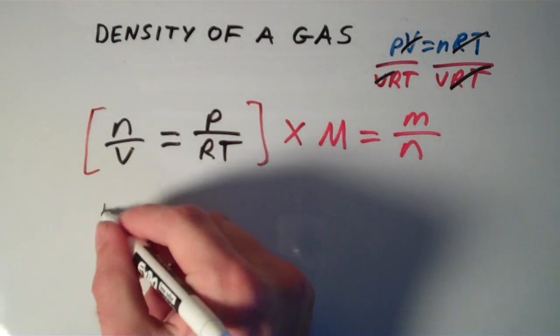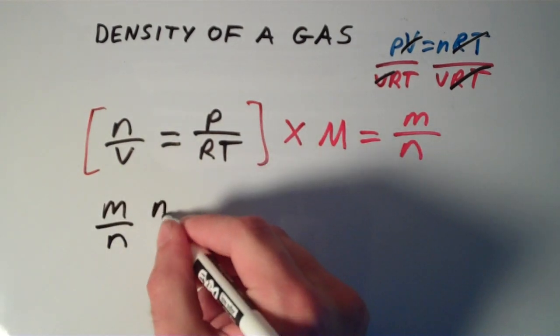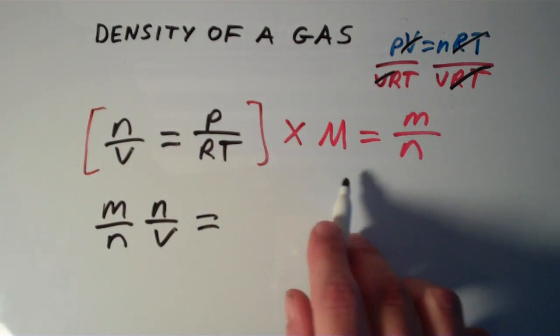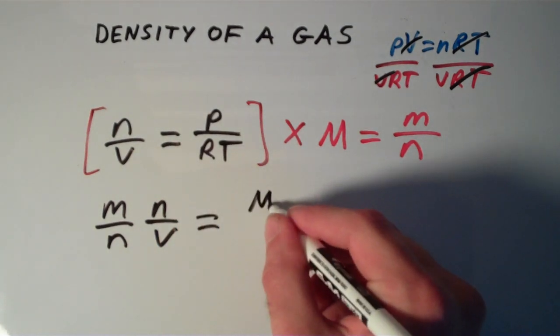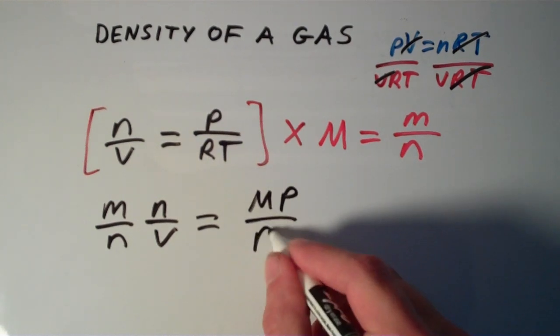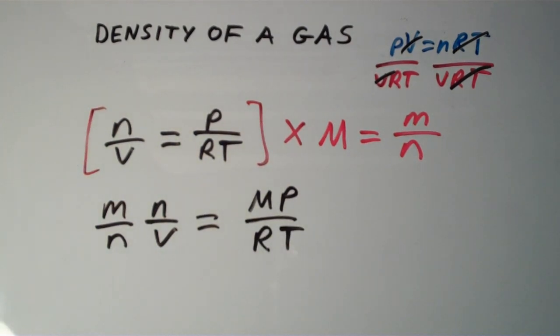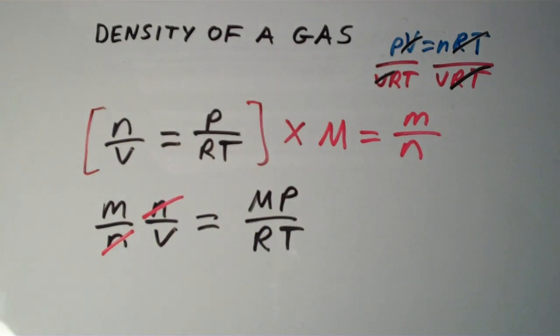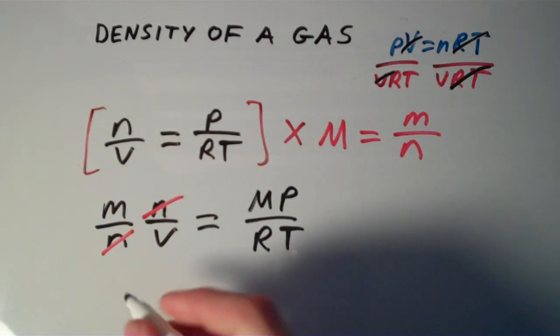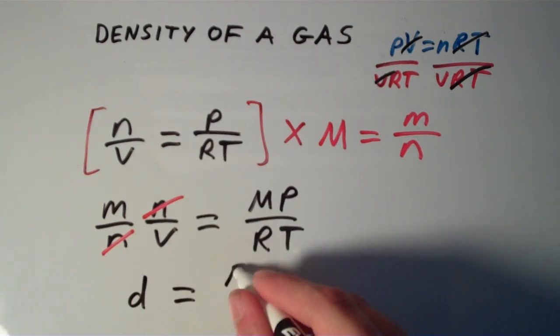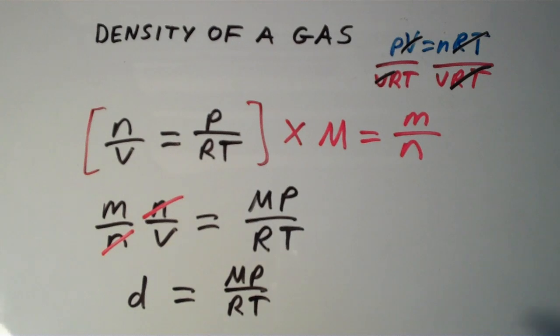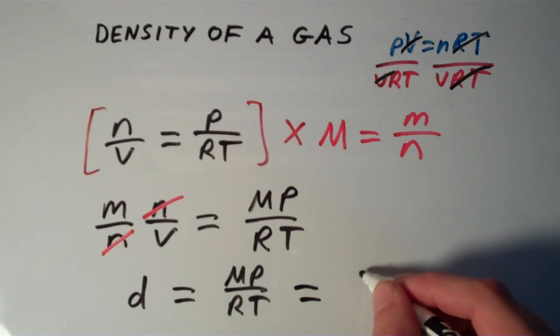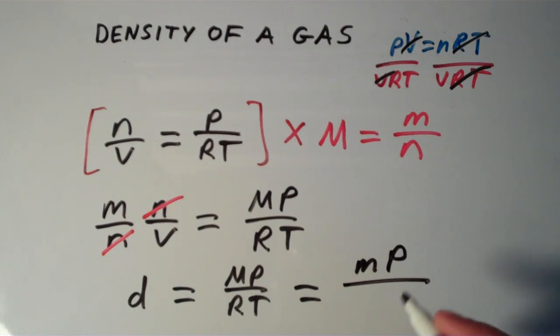I will get M over n times n over V equals, I'm just going to leave the capital M alone on the right-hand side, so MP over RT. The reason I did this is because on the left-hand side, moles cancels with moles, and we have mass per volume, which is density. So d equals MP over RT, and since M is little m over n, we can also say that the density equals little m P over nRT.